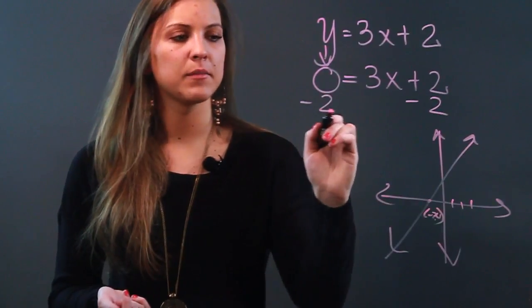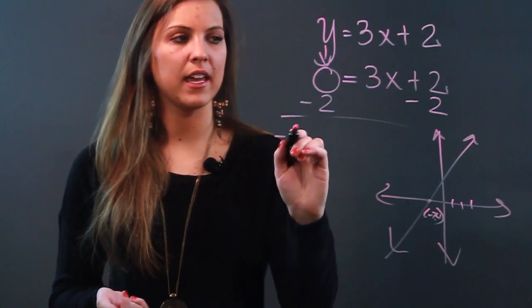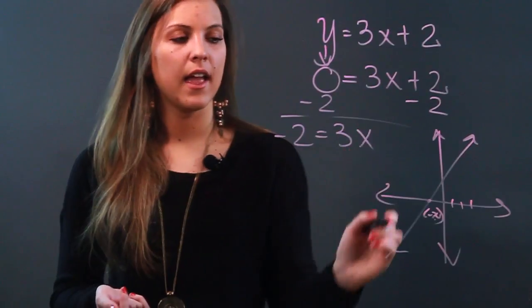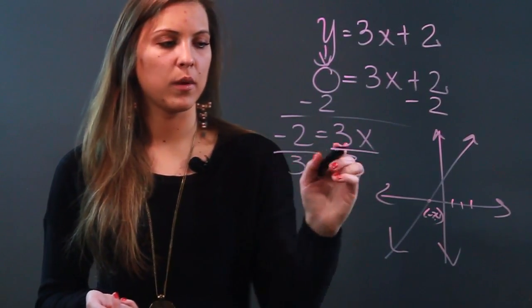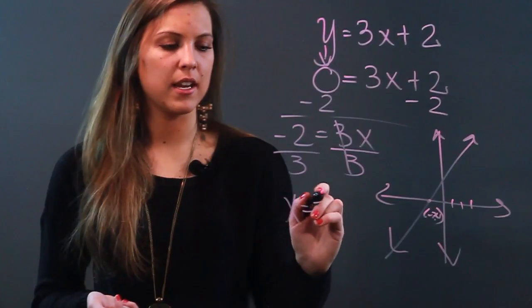So I'm going to subtract 2 on both sides, and when I do that I end up with negative 2 equals 3x. And then to solve for x, I'm going to divide by 3 on both sides. So when I do that I get x equals negative 2 thirds.